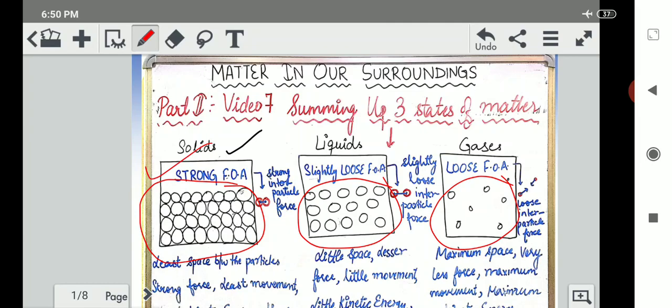On the other hand liquids have looser force of attraction because their particles have little spaces between them. And gases have a lot of space between them as we have already studied, so they have the most loose intermolecular force between them.